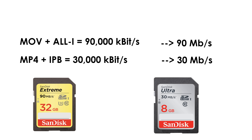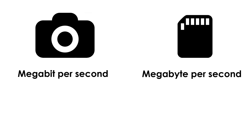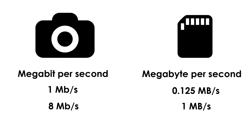No, it doesn't — for two reasons. First of all, the camera shows megabit per second and the SD card shows megabyte per second, but megabit and megabyte are not the same — almost everyone makes this mistake. 1 megabit per second equals 1,000 kilobit per second, which is equal to 0.125 megabyte per second. So 8 megabit per second equals 1 megabyte per second, meaning 90 megabit per second equals 11.25 megabyte per second.